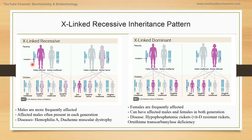When the father has a mutation in the X chromosome, sons are generally not affected because the Y chromosome comes from the father and X comes from the mother. So in that case, sons are unaffected. But since the father has only one X, the daughters are carriers. So when there is a mutation in the X chromosome and the father is affected, you'll most likely have daughters as carriers.